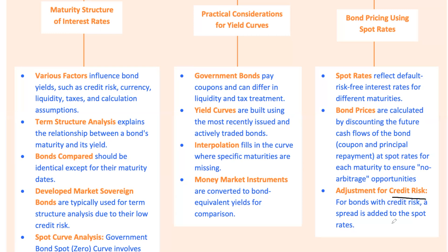Not all bonds are default risk-free. For those with credit risk, an additional spread is typically added to the spot rates. This spread compensates for the higher risk of default, altering the bond's yield upwards to reflect the true cost of borrowing or the real return to the investor. Combining all these elements gives us a comprehensive understanding of how the bond market operates, from basic yield analysis to complex price calculations using spot rates — crucial for any finance professional looking to master investment and credit analysis.